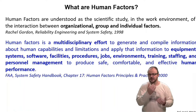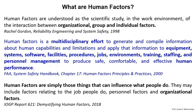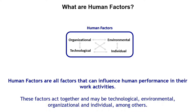In this way, EOGP in 2018 showed us that human factors are simply those things that can influence what people do, what we do. And once more, organizational issues have an important role in this understanding. Human factors are all factors that can influence human performance in work activities. These factors act together, integrated, and may be technological, environmental, organizational, and individual, among others.